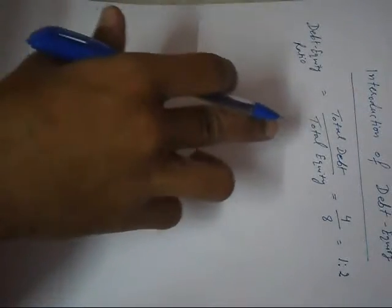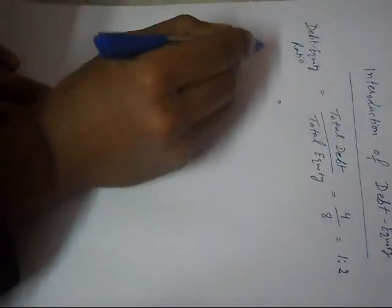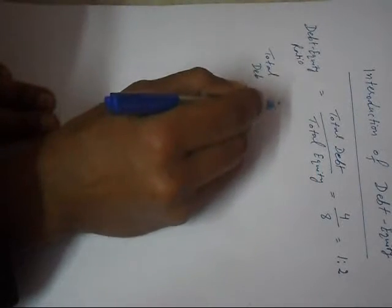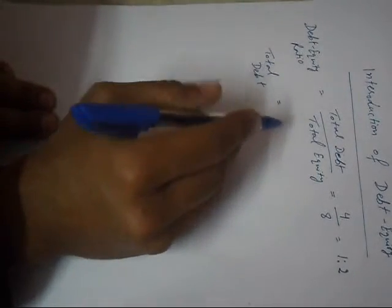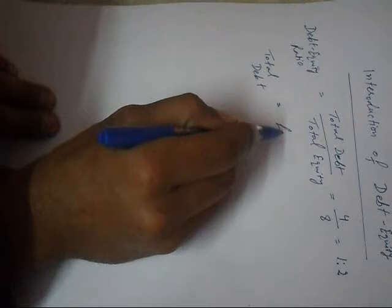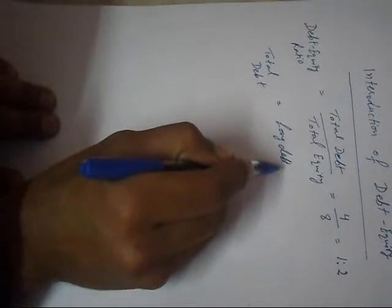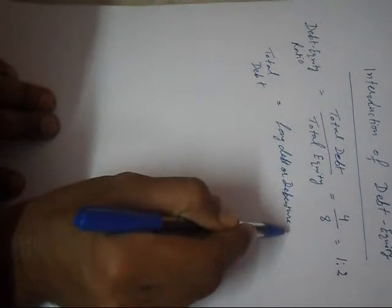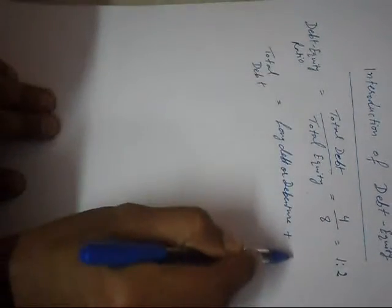What items we should include in total debt? We will include in total debt: one is long-term debt or debenture, second is current liabilities.